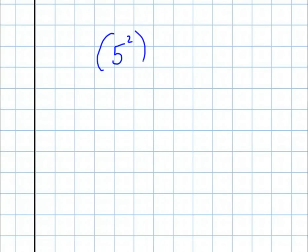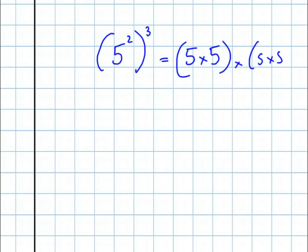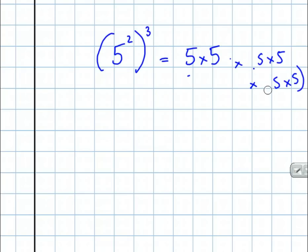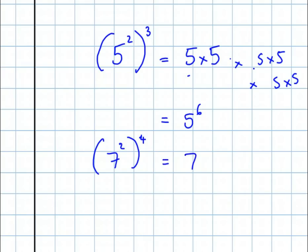Just look at one more. When we get this bracket situation: 5 to the power 2, all cubed. Well, that's shorthand for 5 to the power 2, which is 5 times 5, times 5 times 5 times 5 times 5 — 5 appearing 6 times. So you don't add the indices, you multiply them.